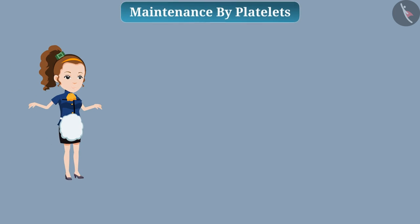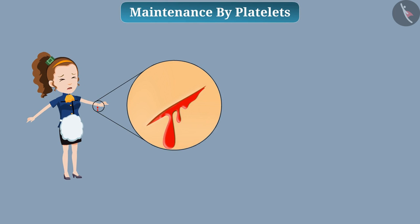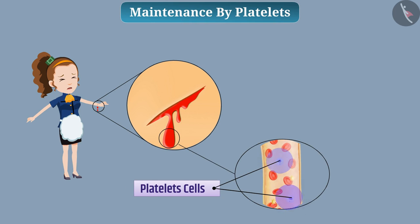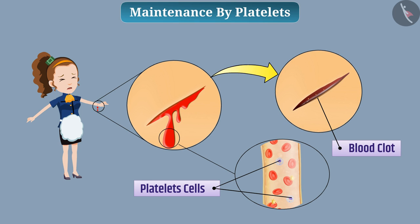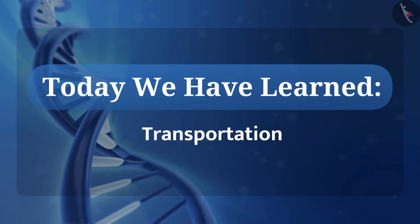When we get hurt, platelets in the blood help stop the bleeding. These cells form a blood clot at the place of bleeding to stop it. So today we learned about transportation in plants and in the human body.